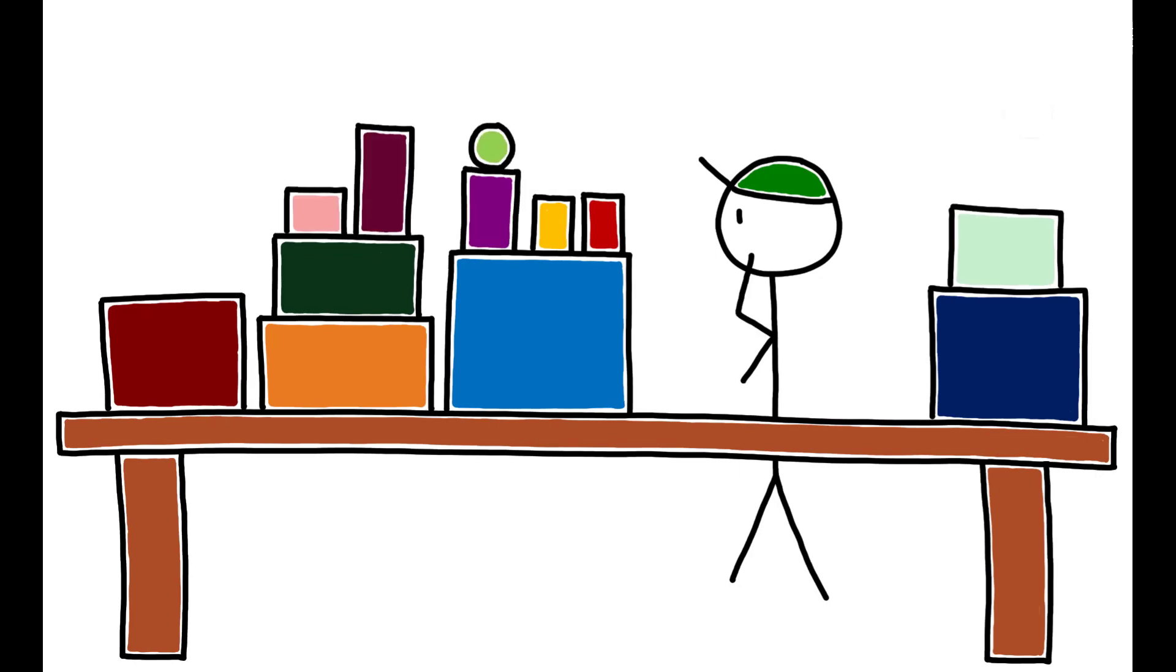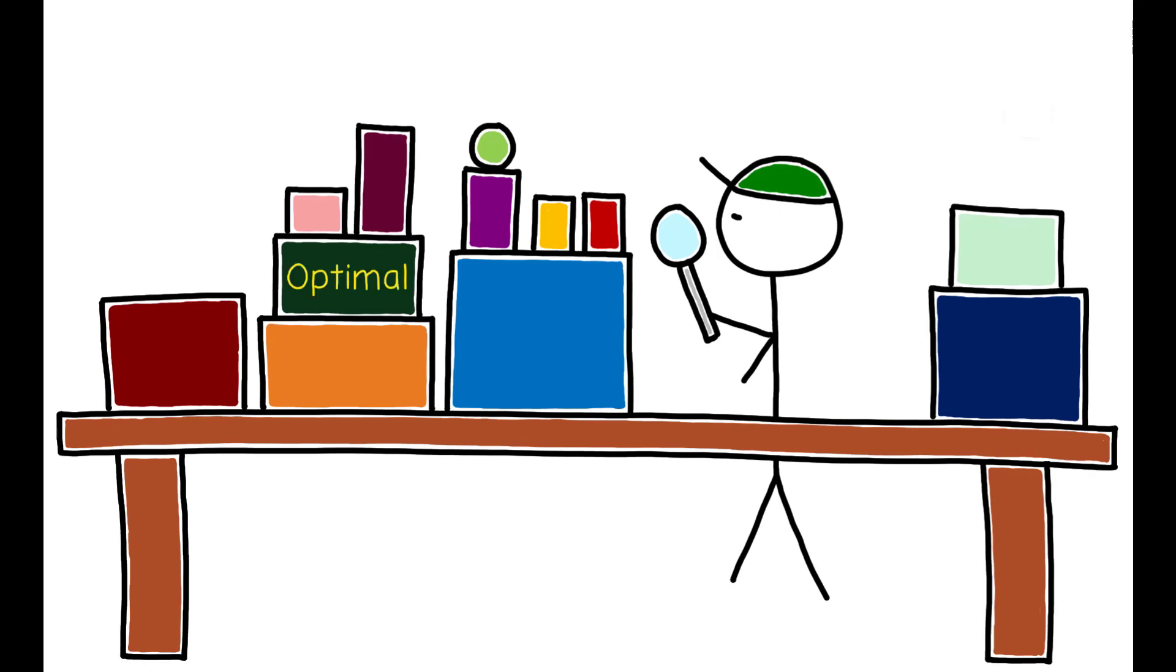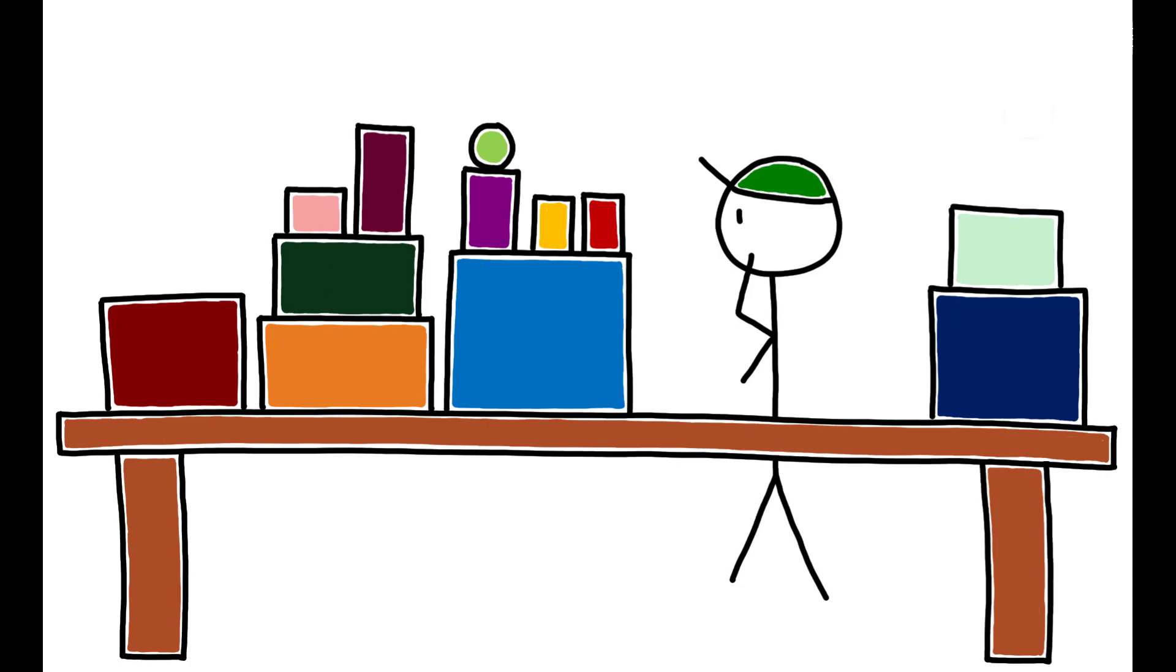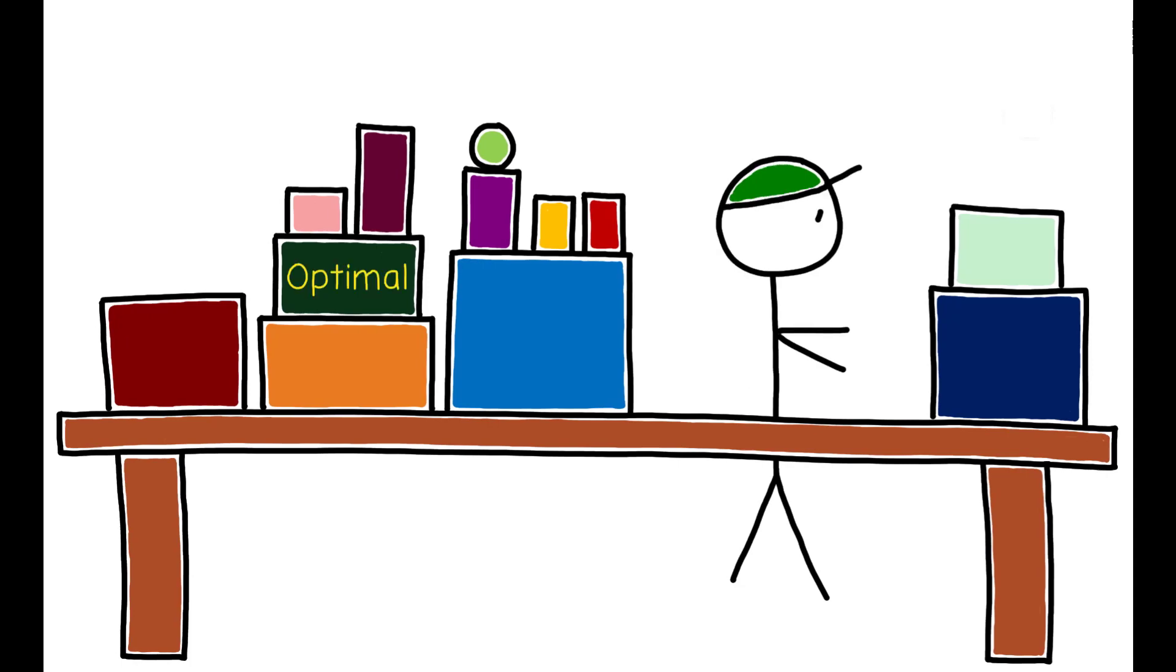Some economists believe that we are rational decision-makers who search over all available options before choosing the optimal one. Others argue this is unrealistic, and that most people simply stop searching once they've found an option that is good enough.